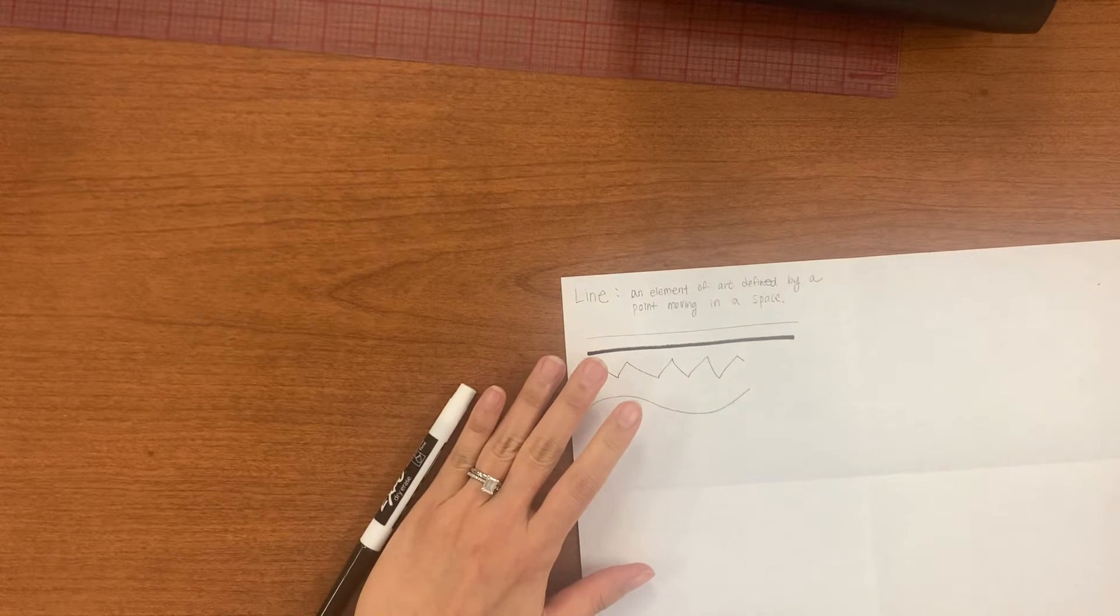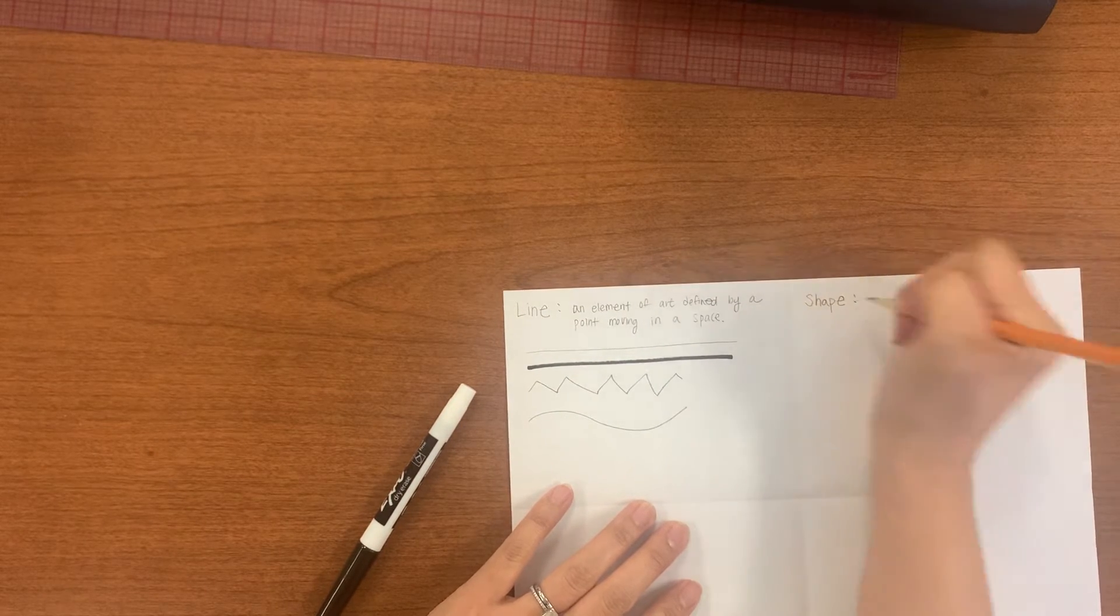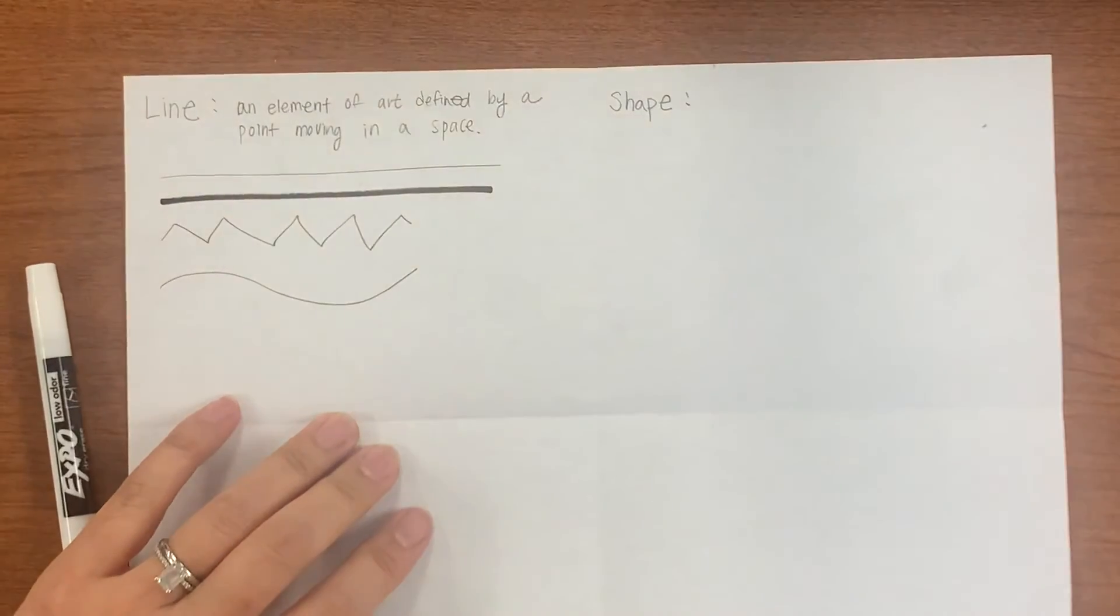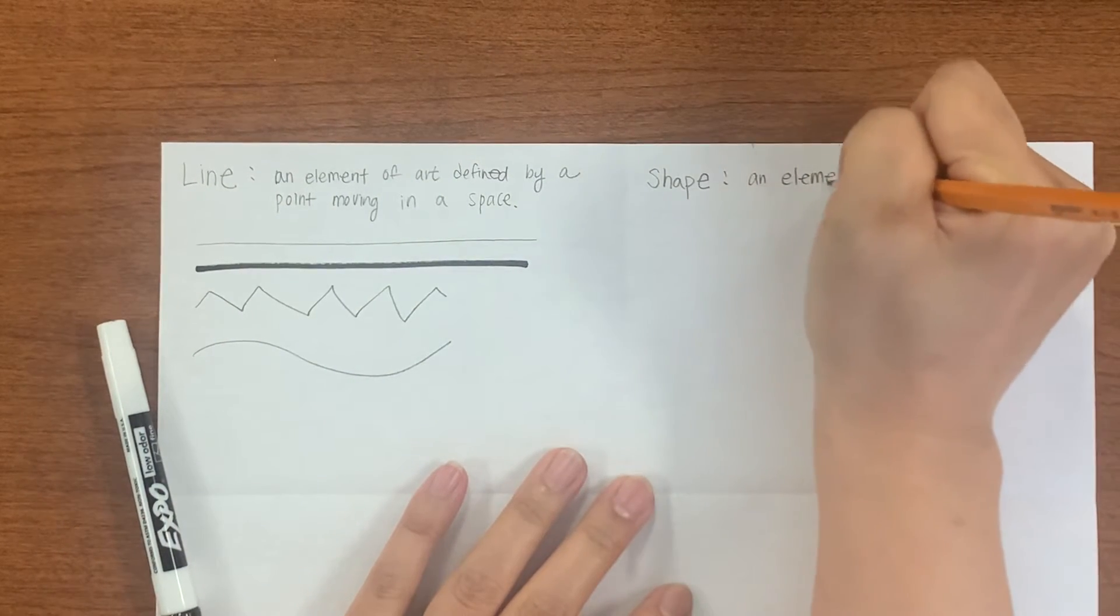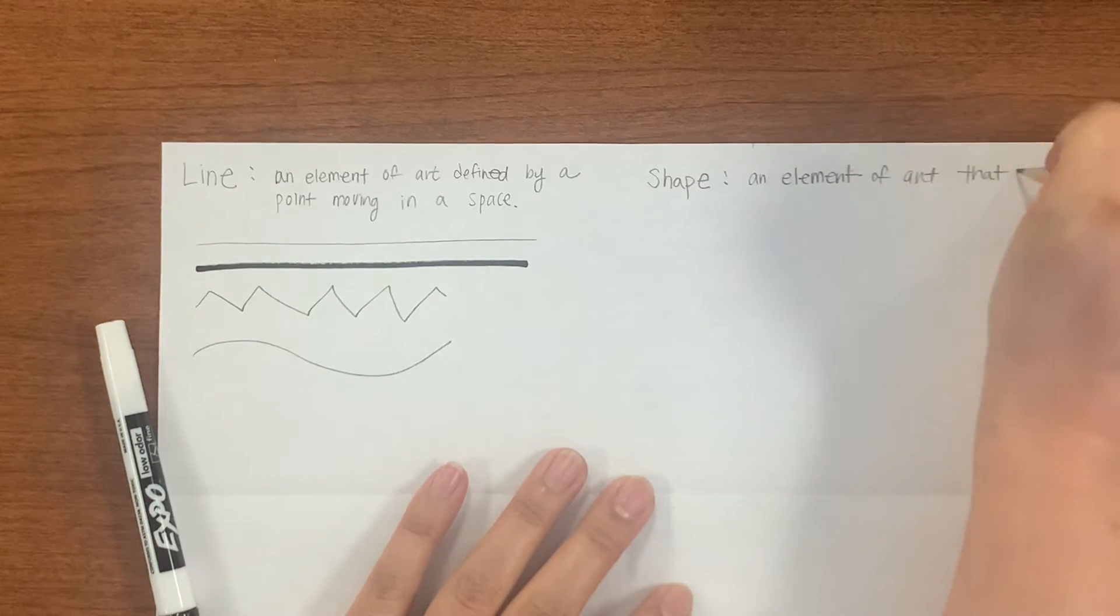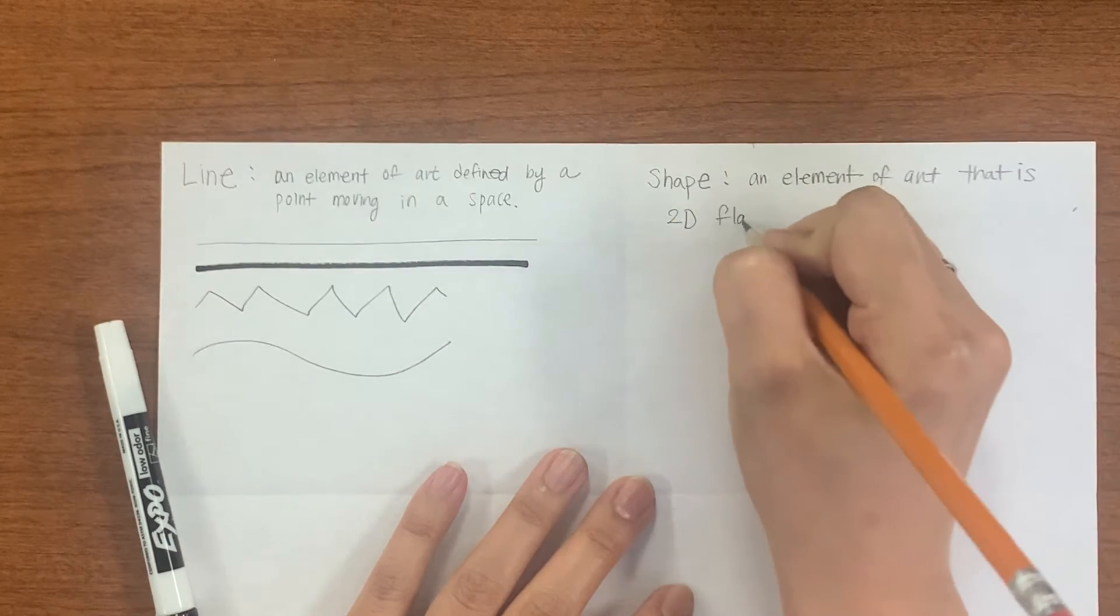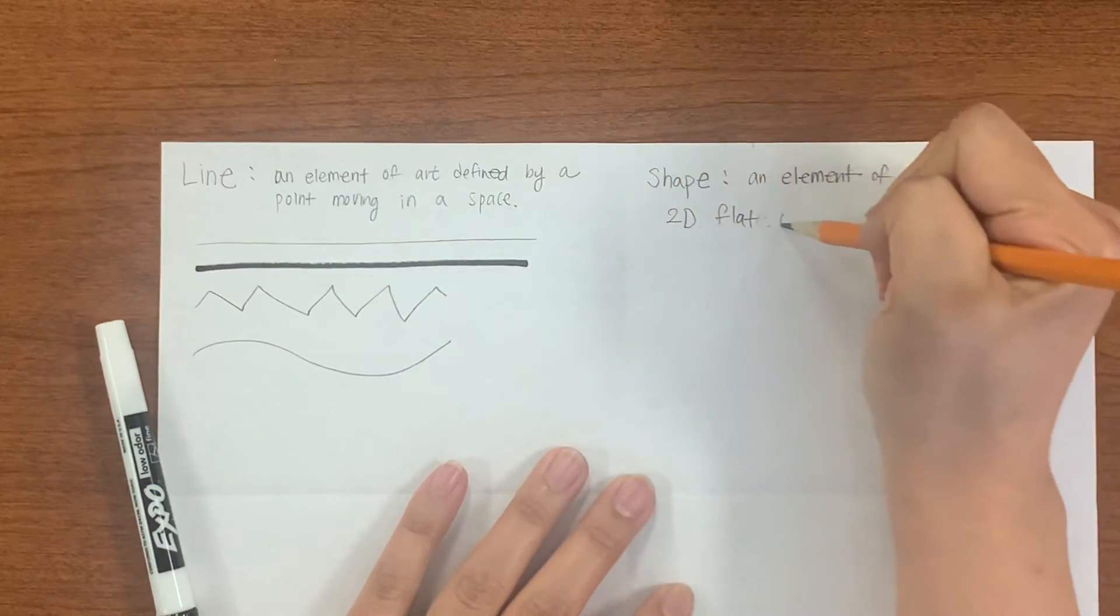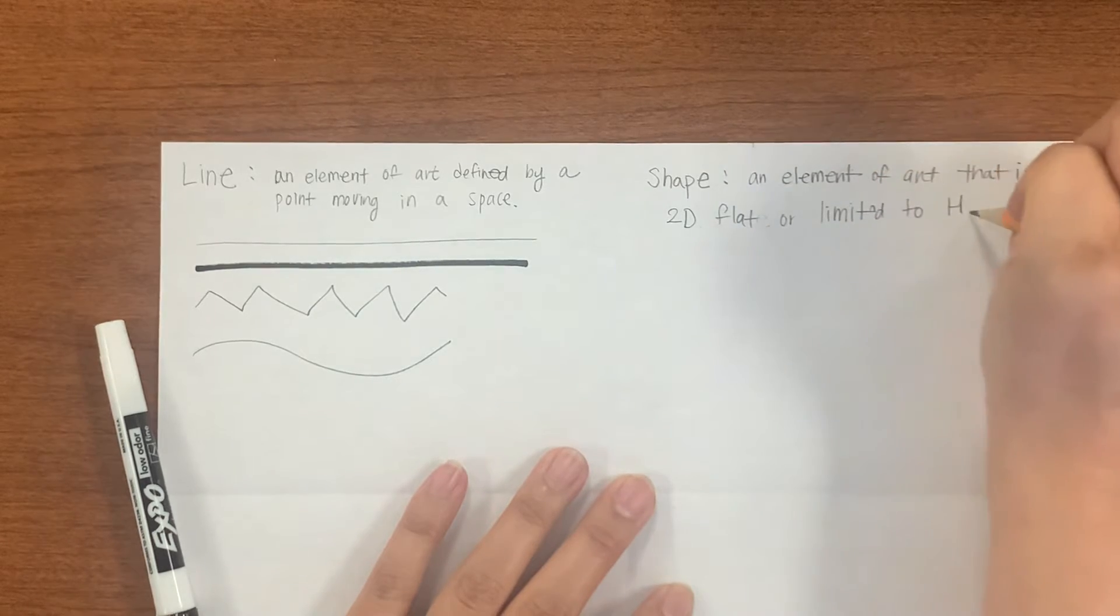Now I'm going to go ahead and move on to number two, which is a shape. And I'm going to write down the definition of a shape right here. You know what? Let me zoom in so that you can see a little bit better. It's an element of art that is 2D, and flat, or limited to height and width.